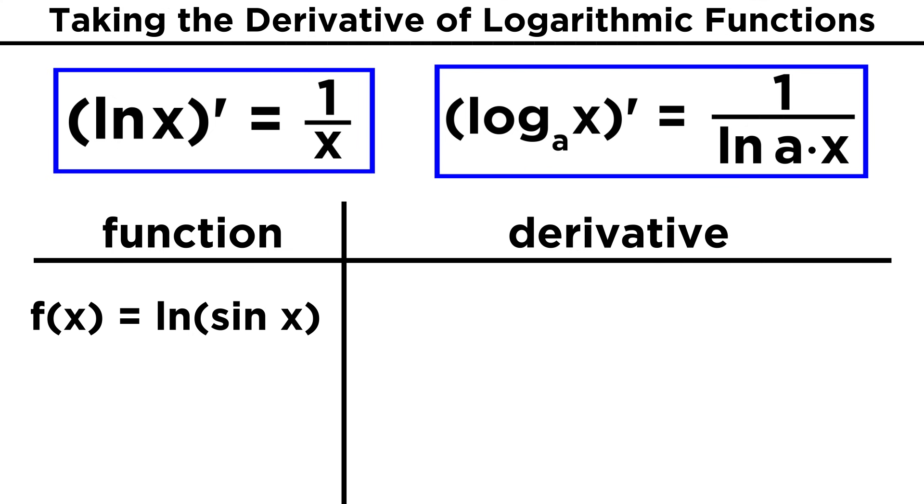Say we want to differentiate the natural log of sine of X. This is a composite function, so we need the chain rule. First, we take the derivative of the natural log, and that gives us the reciprocal of whatever the natural log was operating on. So we get one over sine X.